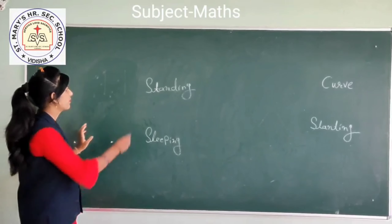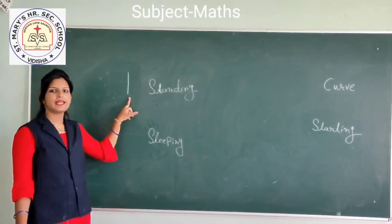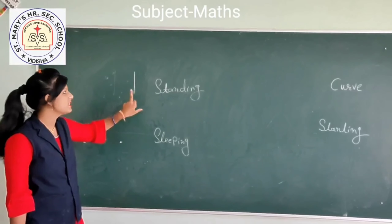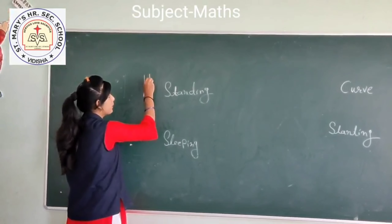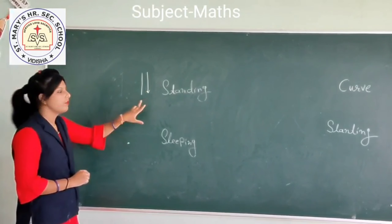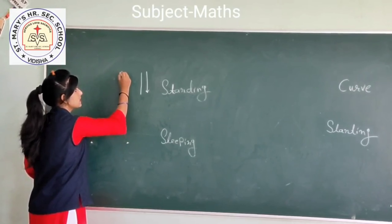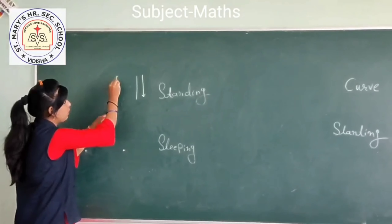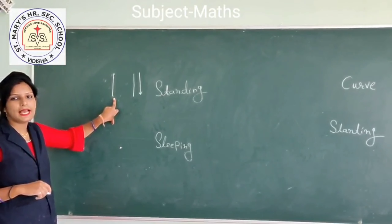Look at here. This is a standing line. It goes up to down — it is a standing line. We will do practice here. We will keep two points like this and we will match this point up to down. This is a standing line.